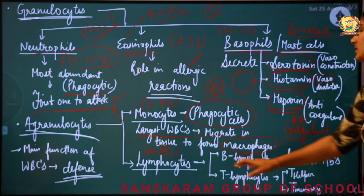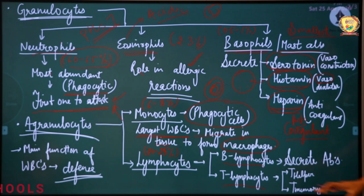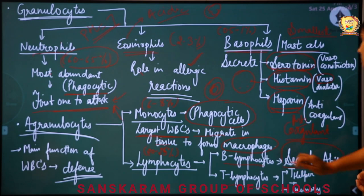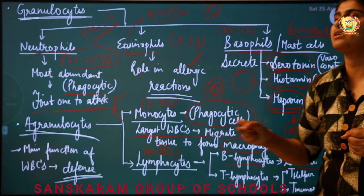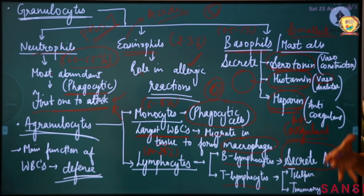Now talking about lymphocytes. Lymphocytes are of two types: B lymphocytes and T lymphocytes. The main function of B lymphocytes is to secrete antibodies. They do not fight infection directly — they secrete antibodies, which are like soldiers being sent out. They just give the order by secreting antibodies.